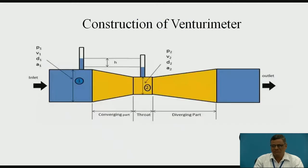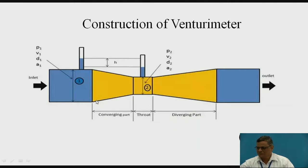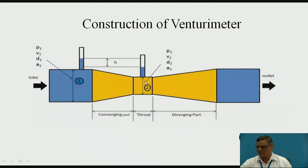Let us go for the construction of the Venturimeter. It consists of three different sections. The blue colored lines indicate the pipe, and the yellow colored zone is the Venturimeter. The first section is called the converging part — the diameter on the left-hand side equals the diameter of the main pipe. The second zone is of constant cross-section area, named the throat. The third zone is the diverging part, where the cross-section increases back to the main pipe diameter.